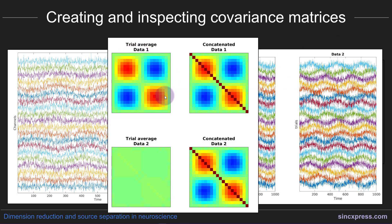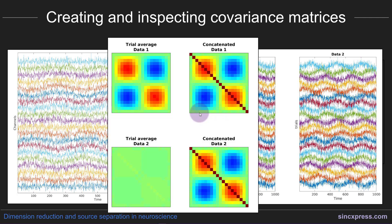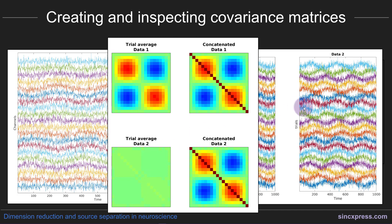When I first averaged all trials together and then computed one covariance matrix, the result for the phase-locked dataset shows clear structure. But for dataset two (non-phase-locked), the covariance matrix is almost entirely zero — the structure is nearly lost. We've lost a huge amount of information just by averaging over all trials first and then computing the covariance matrix.